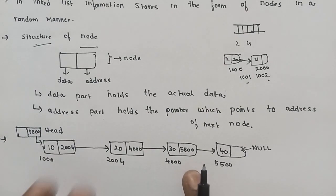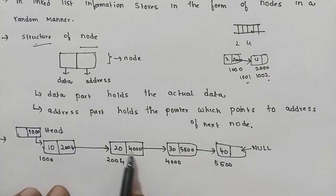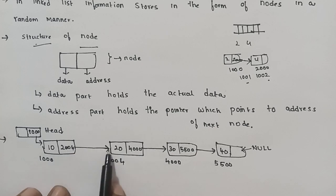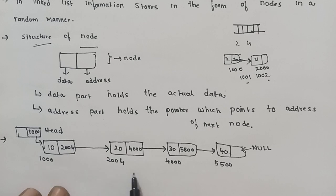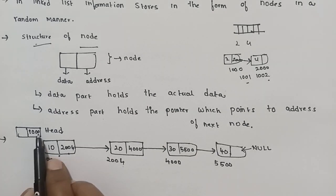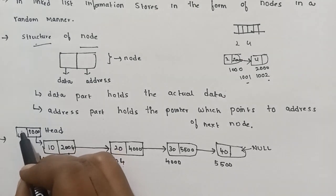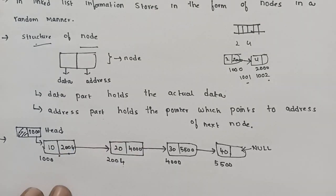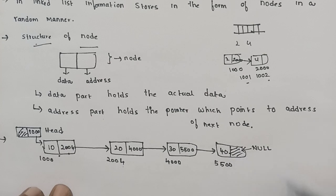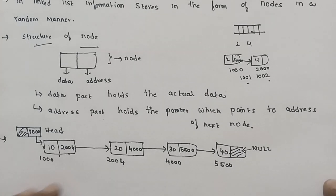This is the structure of a linked list. The nodes are connected based on the address part. The head pointer points to the first node of the linked list. The address part of the last node contains null, indicating the end of the linked list.